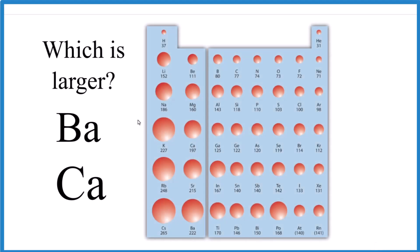Let's take a look at which one of these atoms is larger, Ba or Ca. We have barium and calcium.